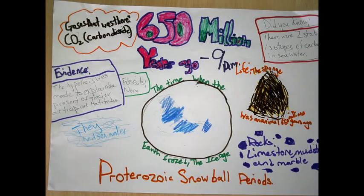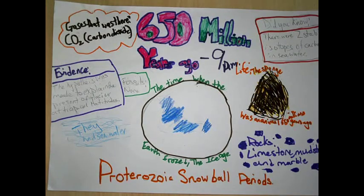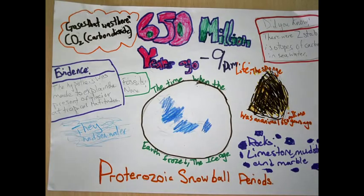650 million years ago, at 9 p.m., the gas was CO2 — carbon dioxide. It was the time when the Earth froze: the Ice Age, the Snowball Earth period. The hypothesis was made to explain the presence of glaciers at tropical latitudes. They had no water. The rock was limestone, mudstone, and marble. The life was sponge. Did you know that there were two stable isotopes of carbon in seawater?